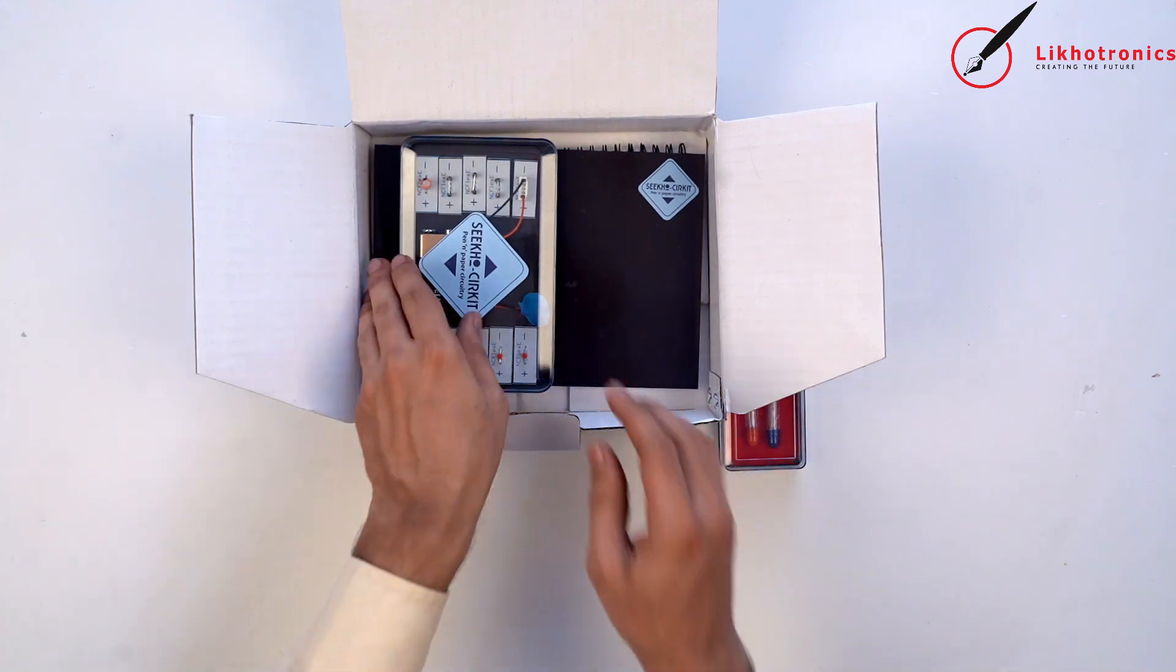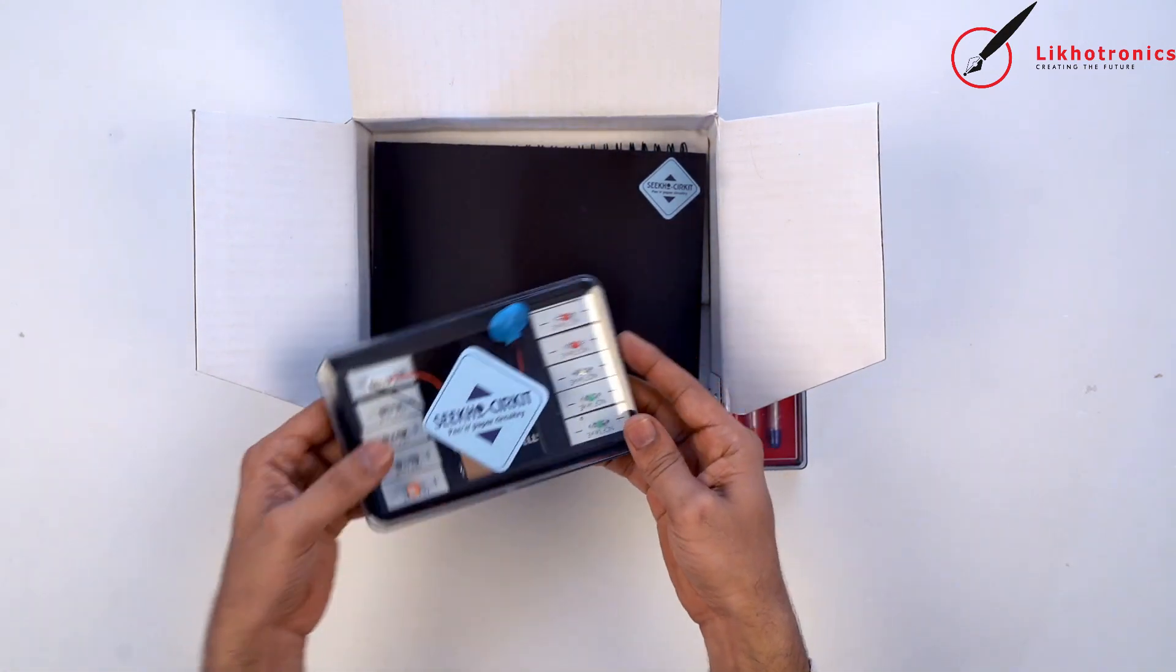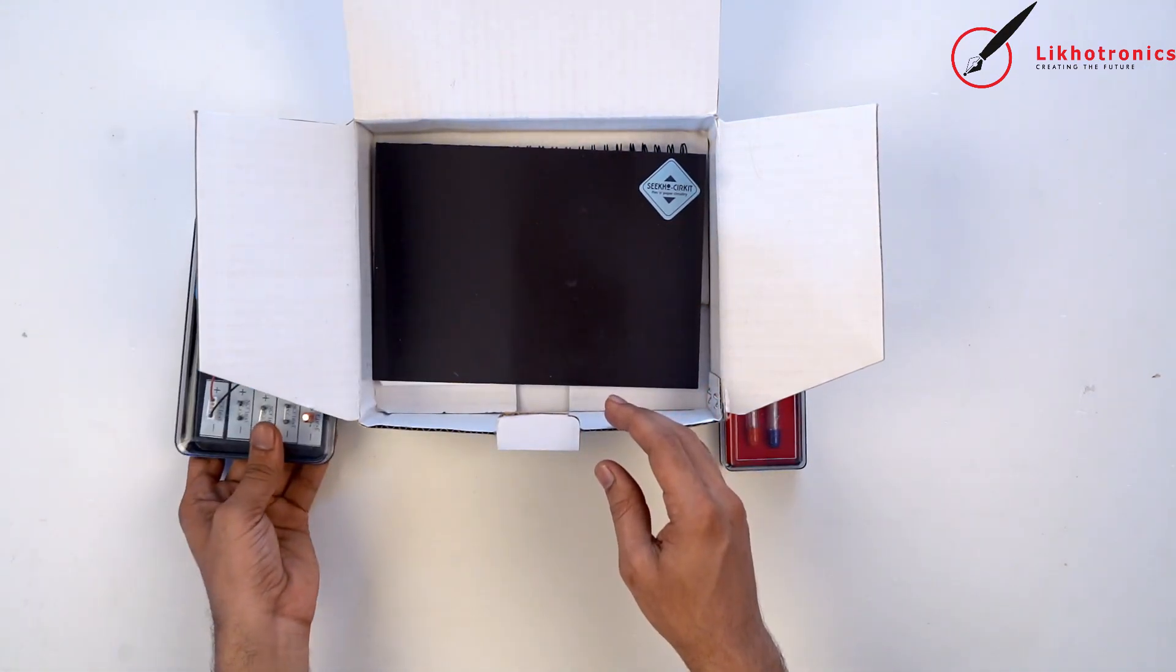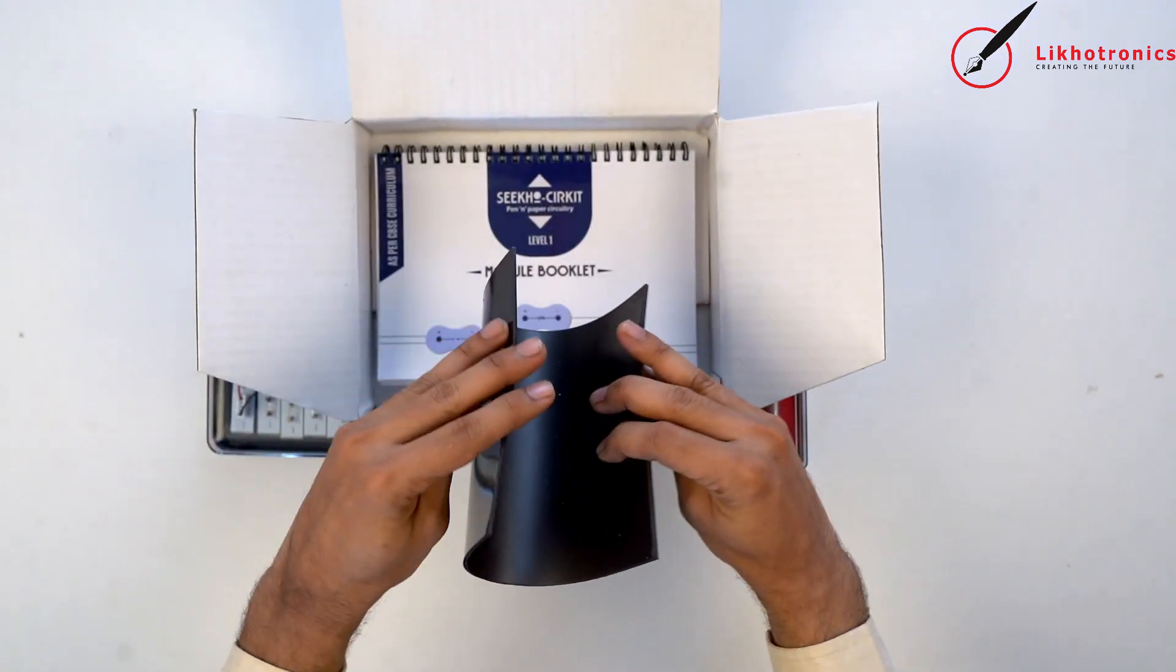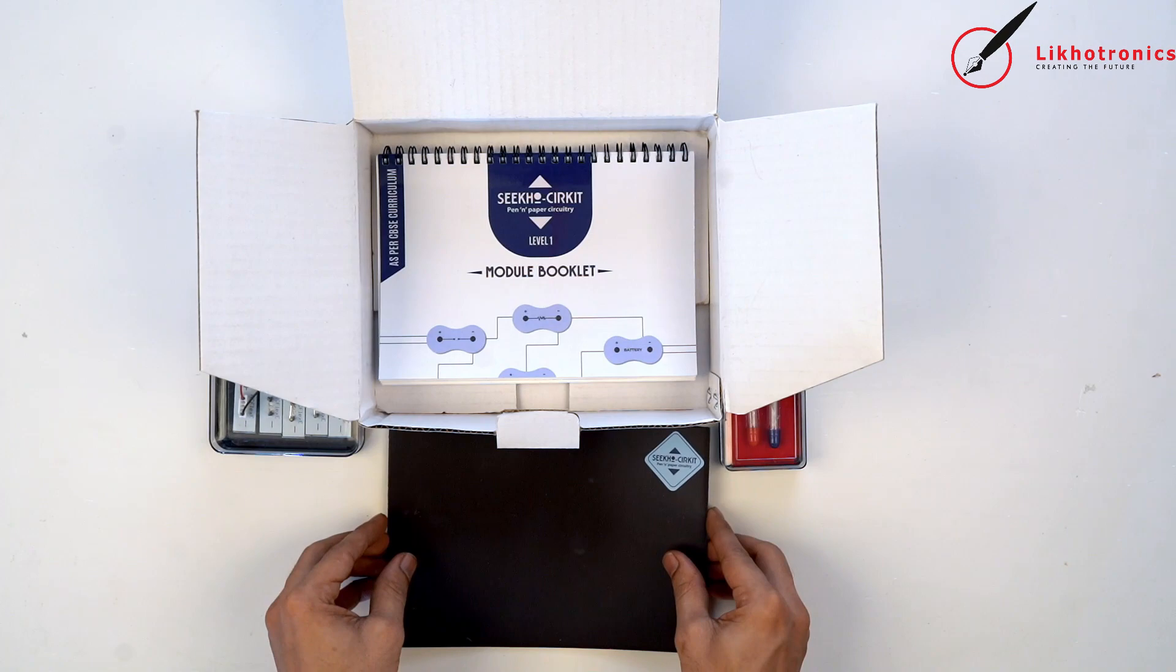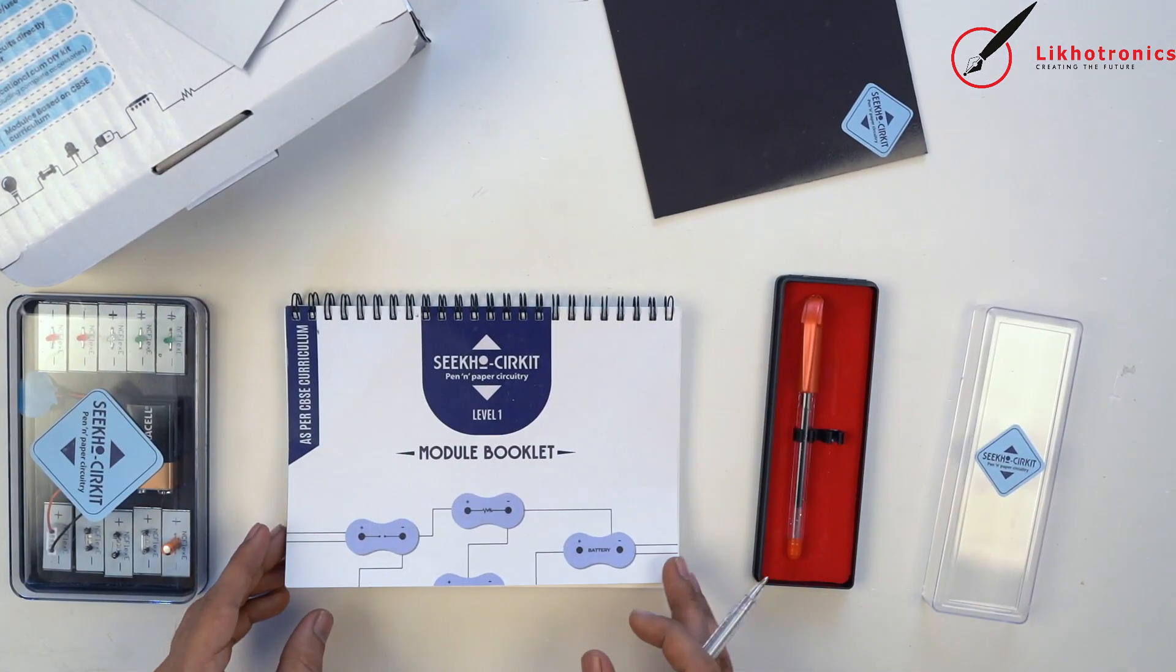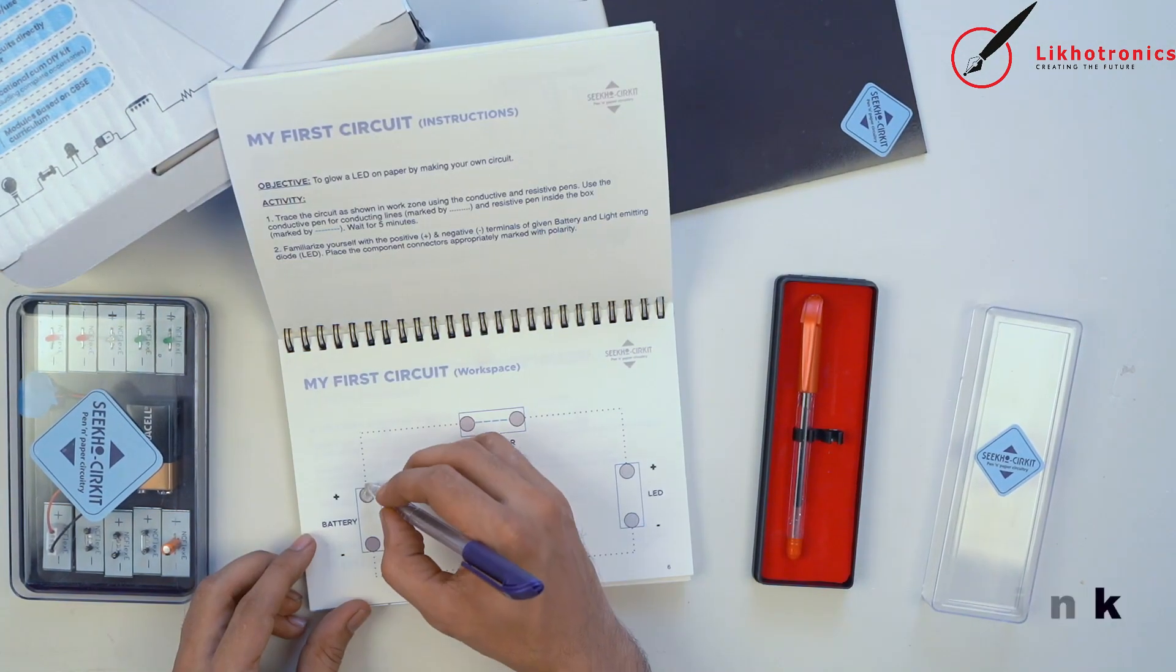This is a kit for paper circuitry. This portable kit comes with a pair of pens, component connectors, a magnetic sheet, and a booklet containing circuits based on NCERT syllabus. You can take a piece of paper and make circuits using these pens.